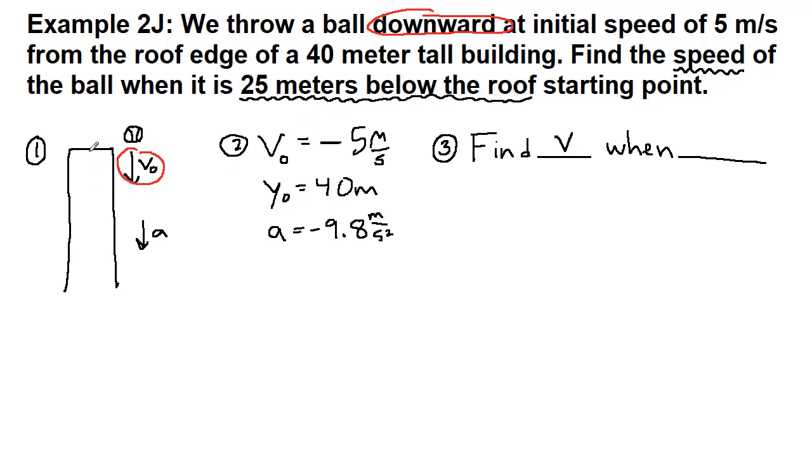So if we're here, we are asking for when this difference is 25 meters. But that means that what y value is that compared to the ground of zero. We are asking for v when y equals not 25, but 15 meters.